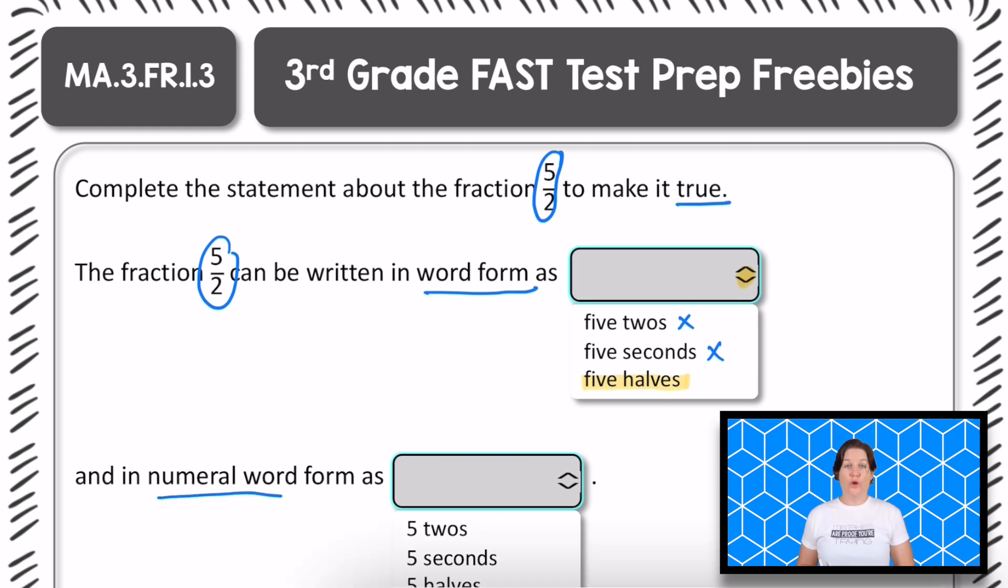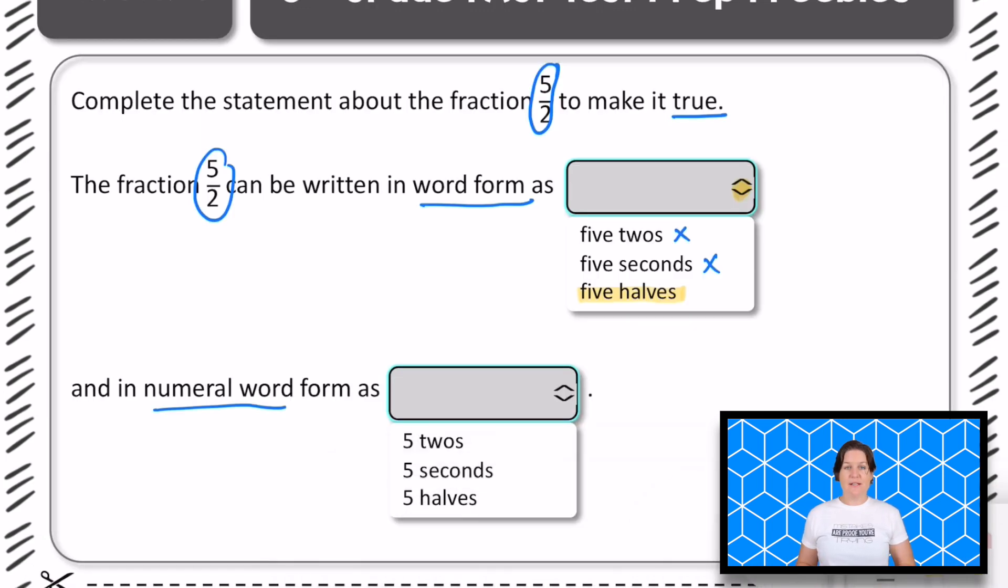Next up, we've got the numeral word form. And that means we have a number and a word together numeral word. So we have everyone has the first one of five. It's not five twos. It's not five seconds. We would read this as five halves. Again, you would click that drop down in order to drop down all the answer choices. And you would select five halves.